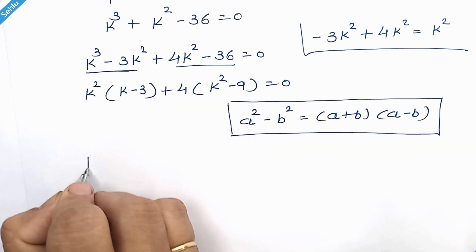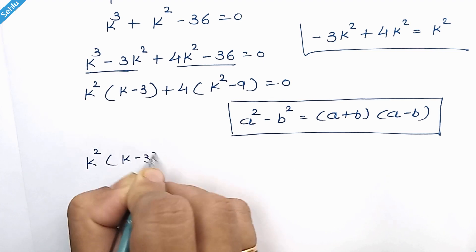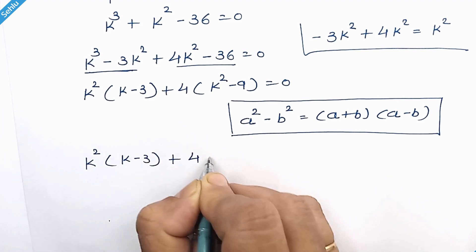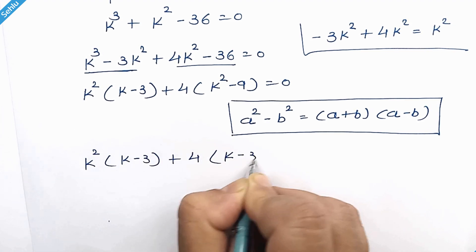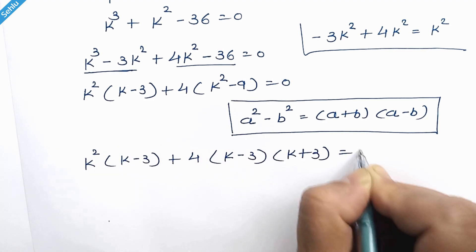So our equation will be k square times k minus 3 plus 4 times k minus 3 times k plus 3 is equal to 0.